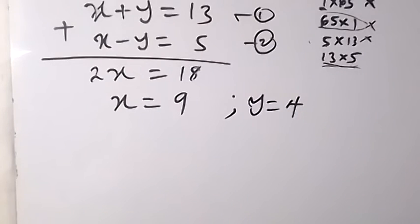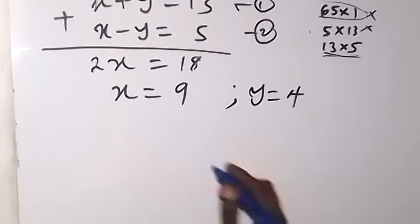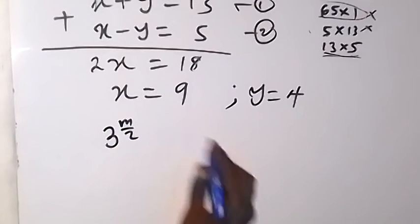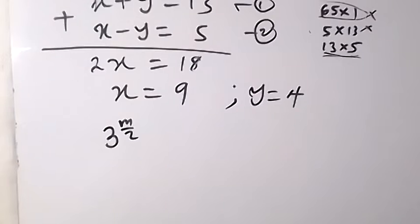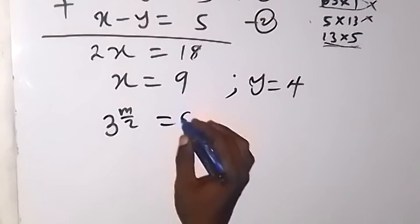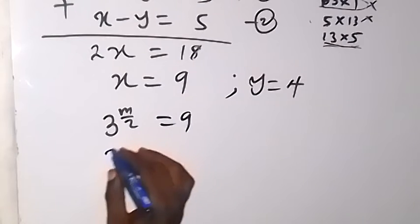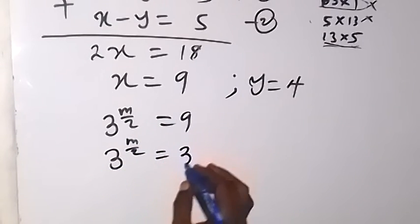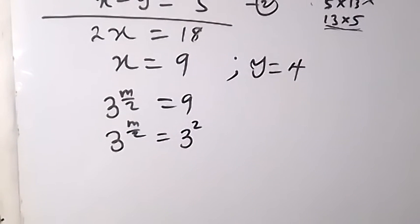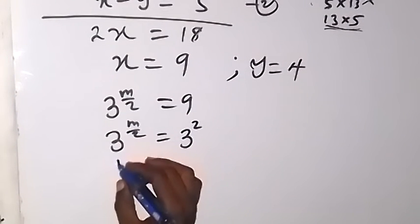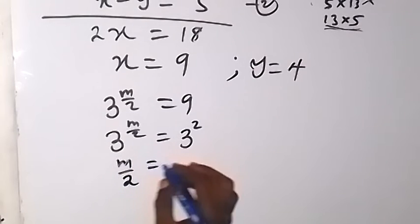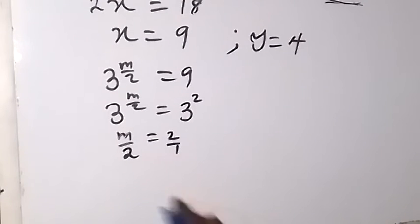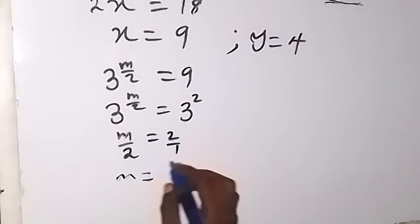Don't forget that x equals 3 raised to power m over 2, which equals 9. We can express 9 as 3 raised to power 2. Since the bases are equal, we equate the exponents: m over 2 equals 2. Cross-multiplying, m equals 2 times 2, which is 4. Similarly, y equals 2 raised to power m over 2 equals 4, which is 2 raised to power 2, giving m over 2 equals 2, so m equals 4 in both cases.